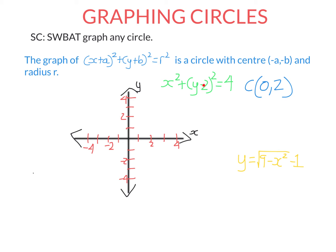Remember it's the negative of this value here, and the radius isn't 4, it's going to be the square root of 4, which is 2. So to graph this, let's locate the centre at (0, 2).